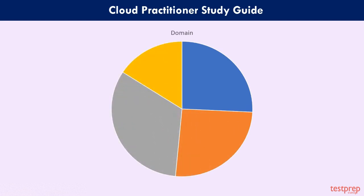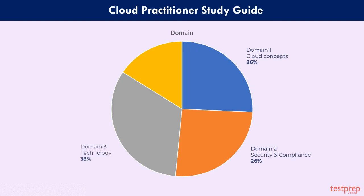Now we will see the domains under the Cloud Practitioner Exam. Domain 1: Cloud Concepts, which consists of 26% weightage in the exam. Domain 2: Security and Compliance, which consists of 25% weightage in the exam. Domain 3: Technology, which consists of 33% weightage in the exam. Domain 4: Billing and Pricing, which consists of 16% weightage in the exam.